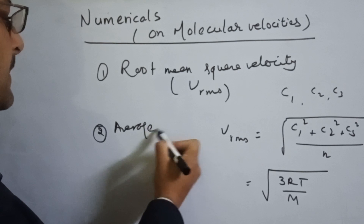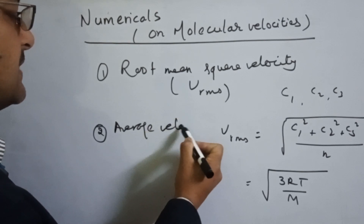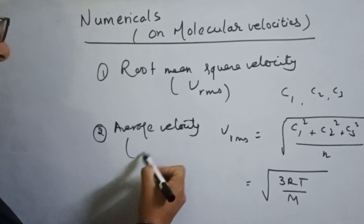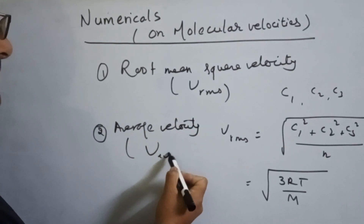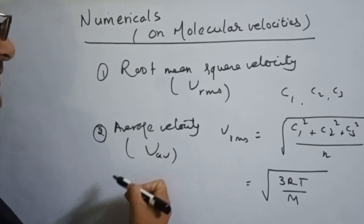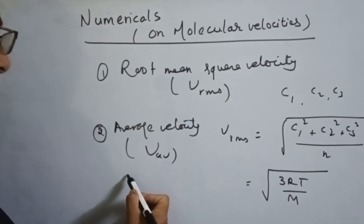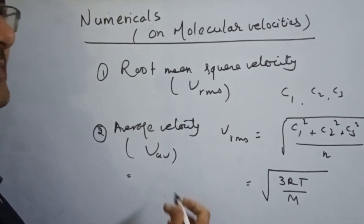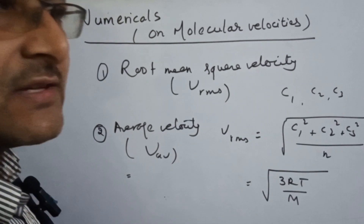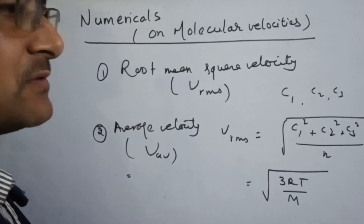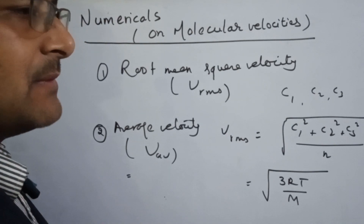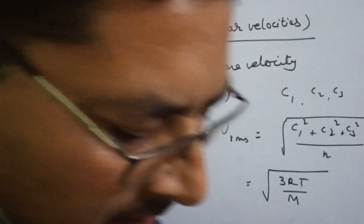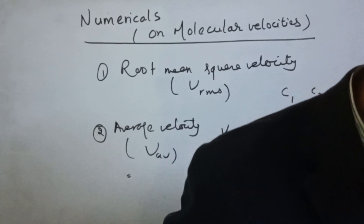The second type is the average velocity of a gas molecule. There is a total average velocity divided by M, covering every velocity of the gas.